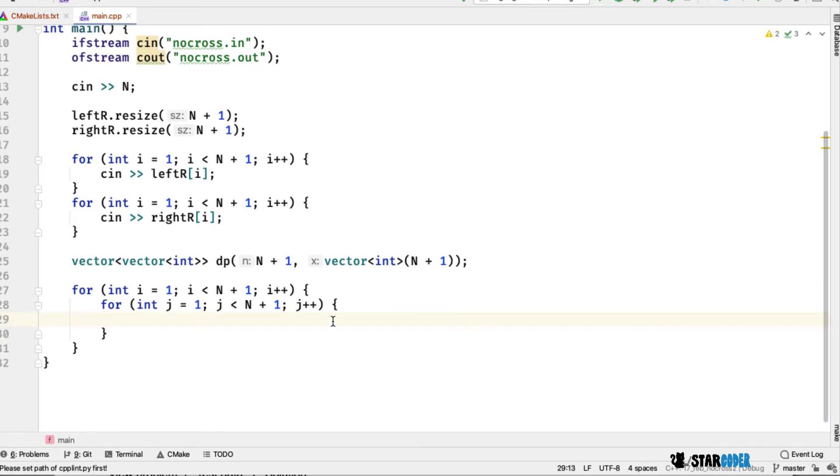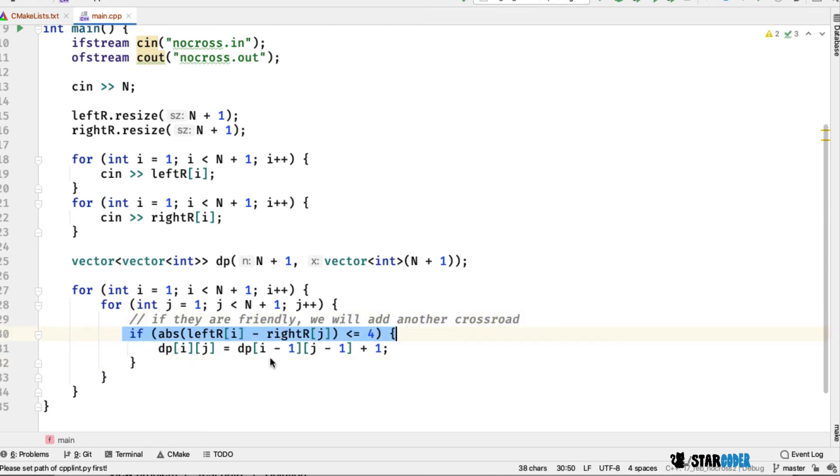If they are friendly we're going to do abs of left[i] minus right[j] and check if it's less than or equal to 4. We'll make the value of dp[i][j] equal to dp[i-1][j-1] plus 1. This is assuming we're adding another line straight across.